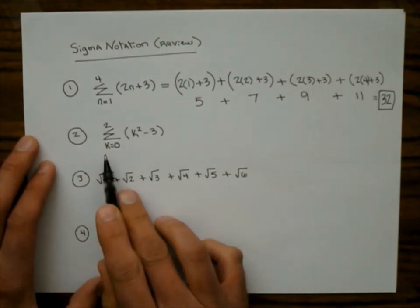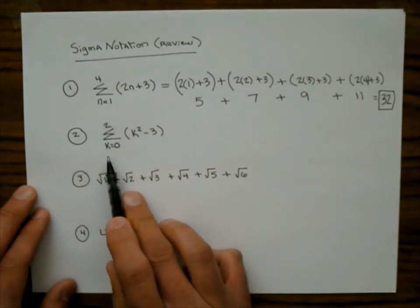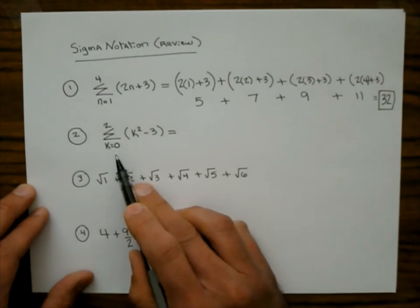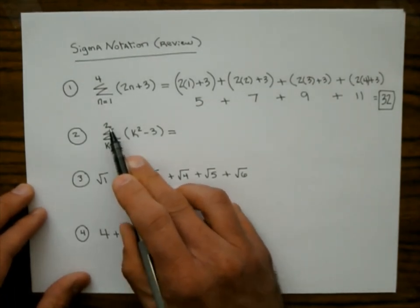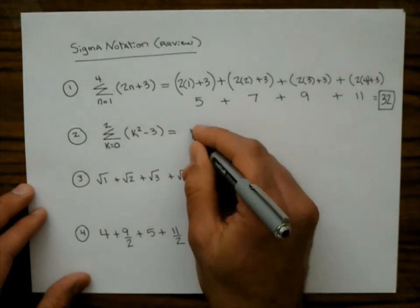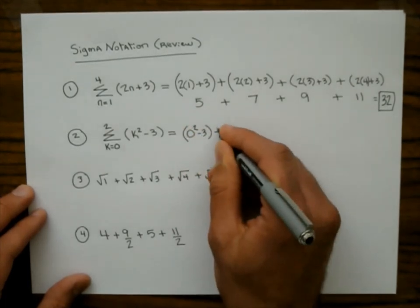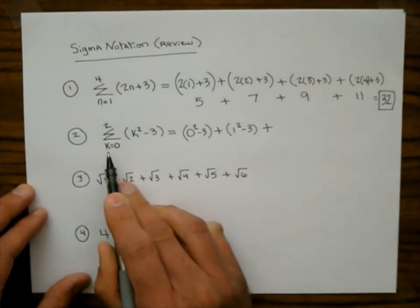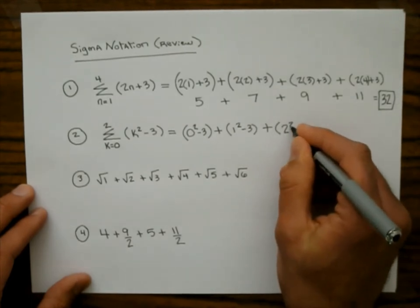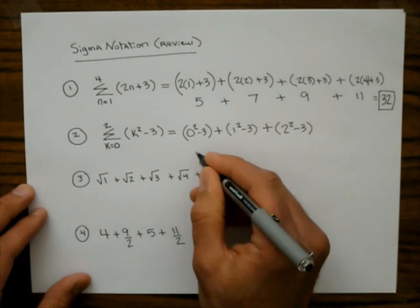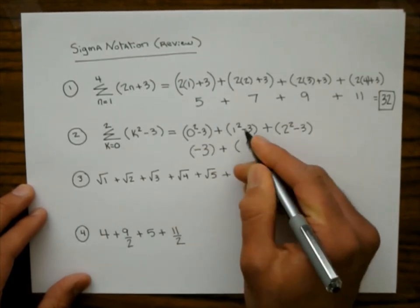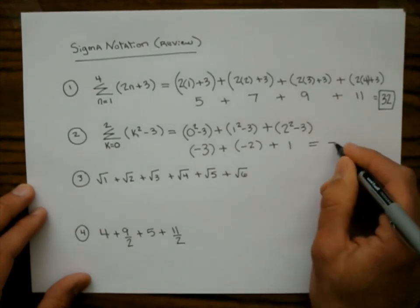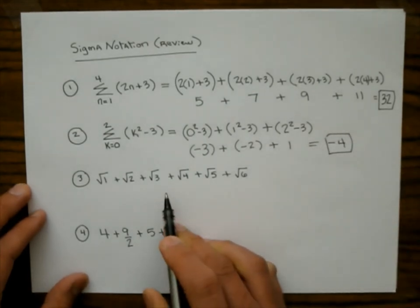This index could be the letter N, K, I, or J — it doesn't always have to start at 1; it could start at 0 or 10. The start point and stop point define the range, and you're summing up on the formula. For example, summing n² − 3 from 0 to 2 gives: 0² − 3 plus 1² − 3 plus 2² − 3, which is −3 plus −2 plus 1, giving a sum of −4.